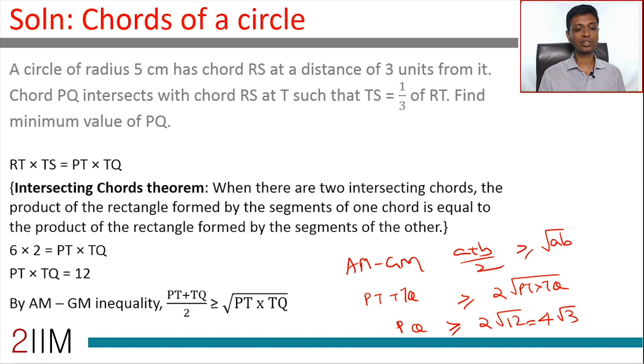As far as geometry is concerned, this theorem states: when two intersecting chords are there, the product of the rectangles formed by the segments of one chord is equal to the product of the rectangles formed by the segments of the other. This is proved using similar triangles.